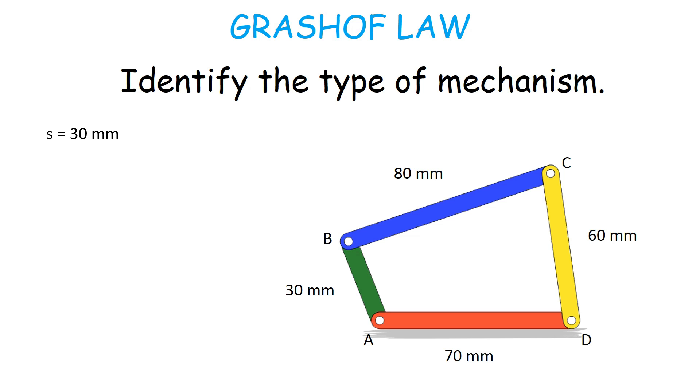The length of the shortest link is 30 mm and that of the longest link is 80 mm. The length of the other two links is 60 mm and 70 mm.